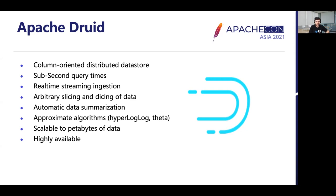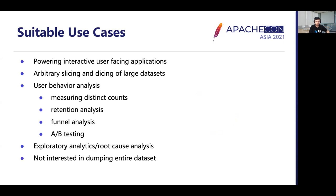Apache Druid is scalable and well-tested in production to petabytes of data. The longest running Druid service, at Metamarkets, has been up and running for several years and my team is still maintaining that service. It is also highly available and supports features such as rolling deployments, rolling upgrades, and data replication.